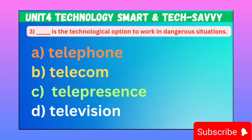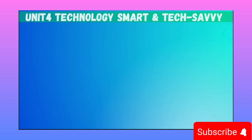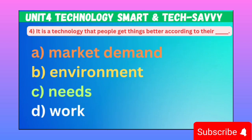MCQ number three: The technological option to work in dangerous situations — it means technology through which people get things better according to their needs. Option A: Market demand. B: Environment. C: Needs. D: Work. Correct option is C, Needs.